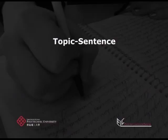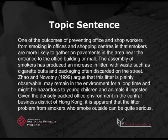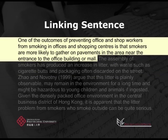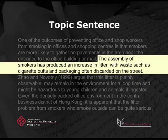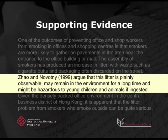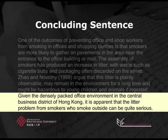Each paragraph should be divided into three parts: first, the topic sentence; then supporting evidence; and finally a concluding sentence. The topic sentence is usually the first sentence of a paragraph, but in this one it's the second sentence — the first sentence acts as a link between the introduction and the first paragraph. The topic sentence tells the reader what the paragraph is about. This topic sentence tells us there has been an increase of litter because more people now have to smoke on the street. The supporting evidence uses a source to show why the litter is a problem — this makes your writing stronger and it's no longer just your opinion. Finally, the concluding sentence links back to the topic sentence as well as the context of the question, Hong Kong.